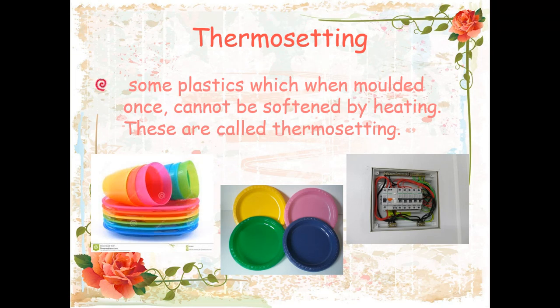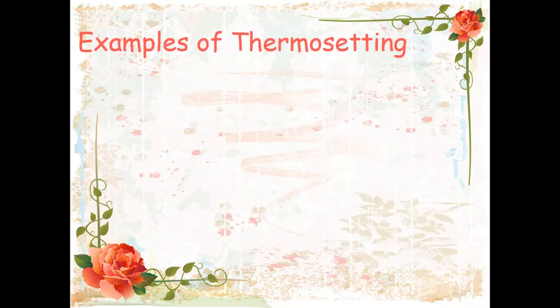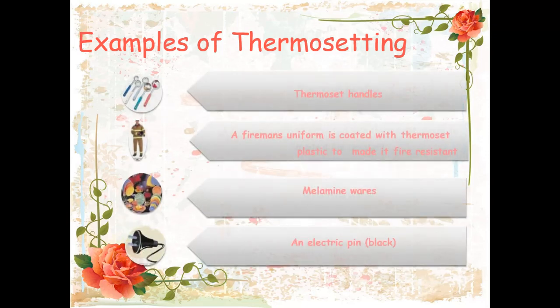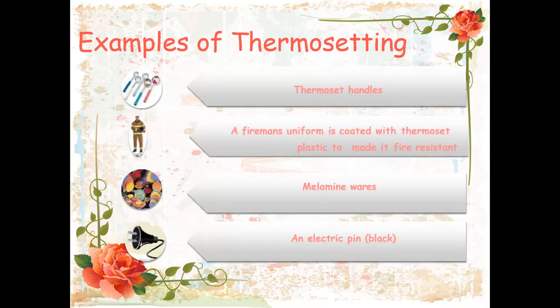Thermosetting plastic examples: kitchen utensil handles with plastic coating — these are thermosetting plastic. You can heat a plastic switch and it will get hot and hotter but will never melt down and never soften. Some melamine wares, large toy cars, and all your electric appliances and electric pins are thermosetting plastic.